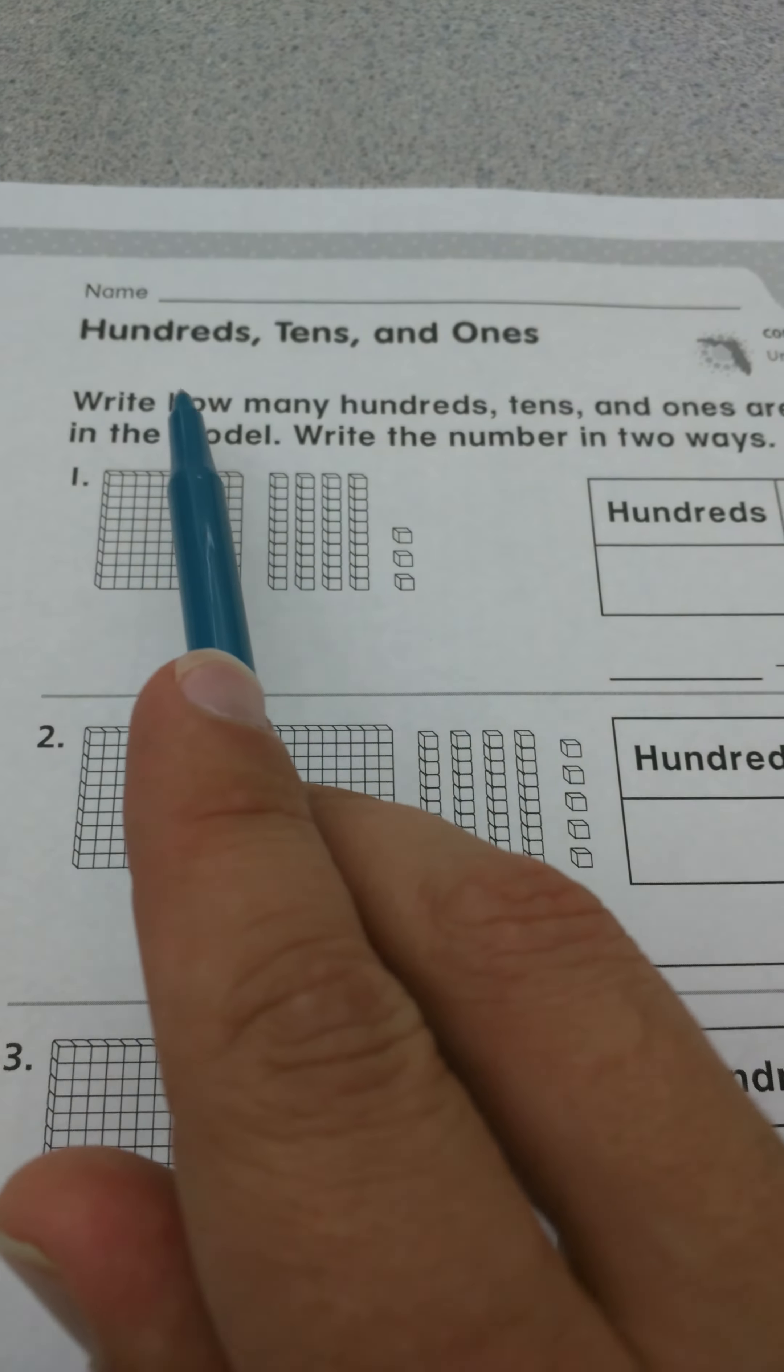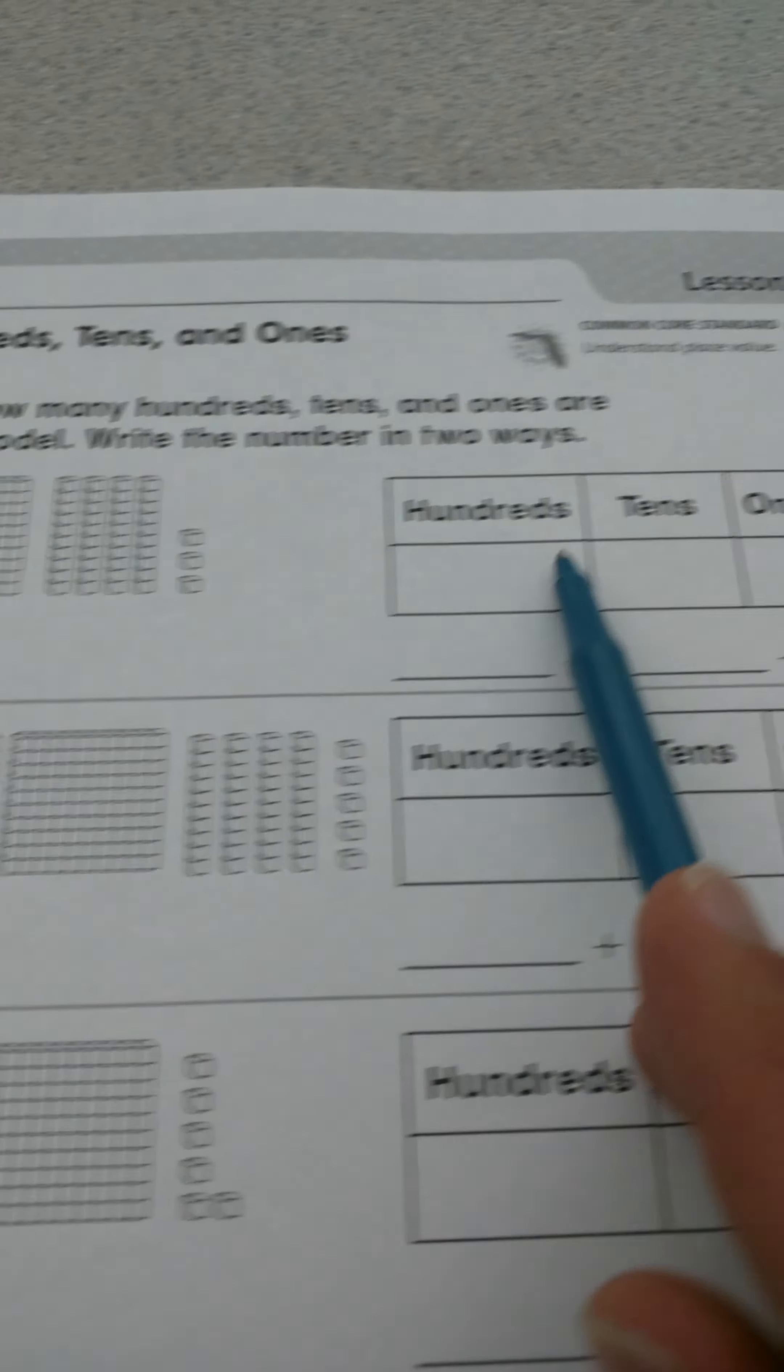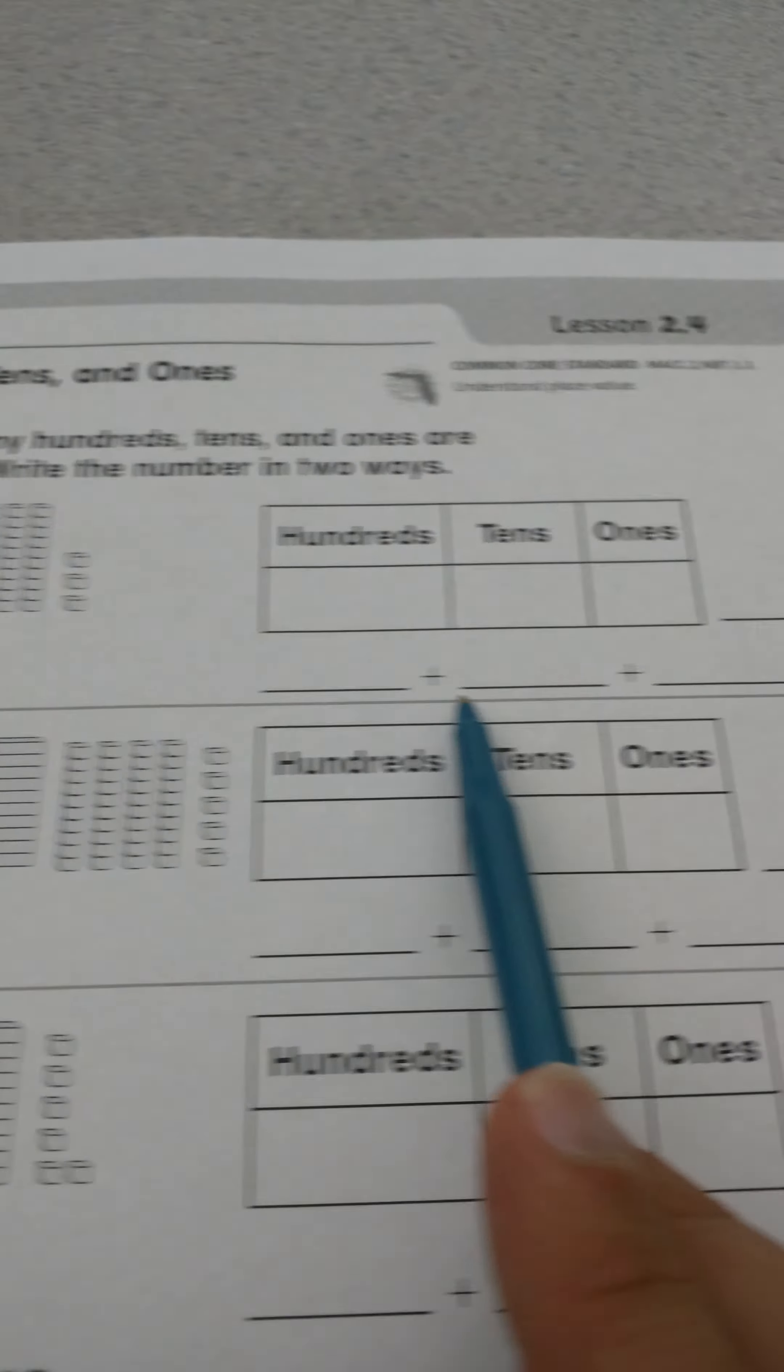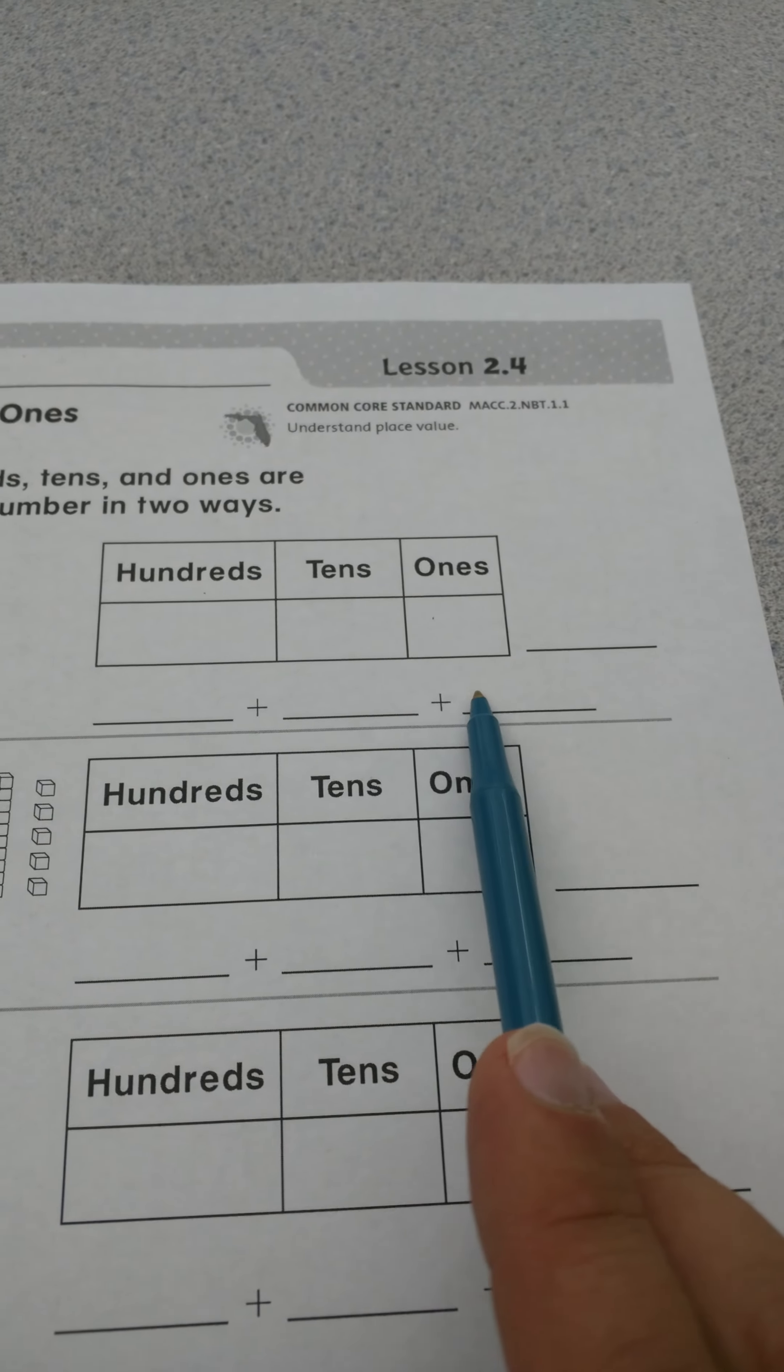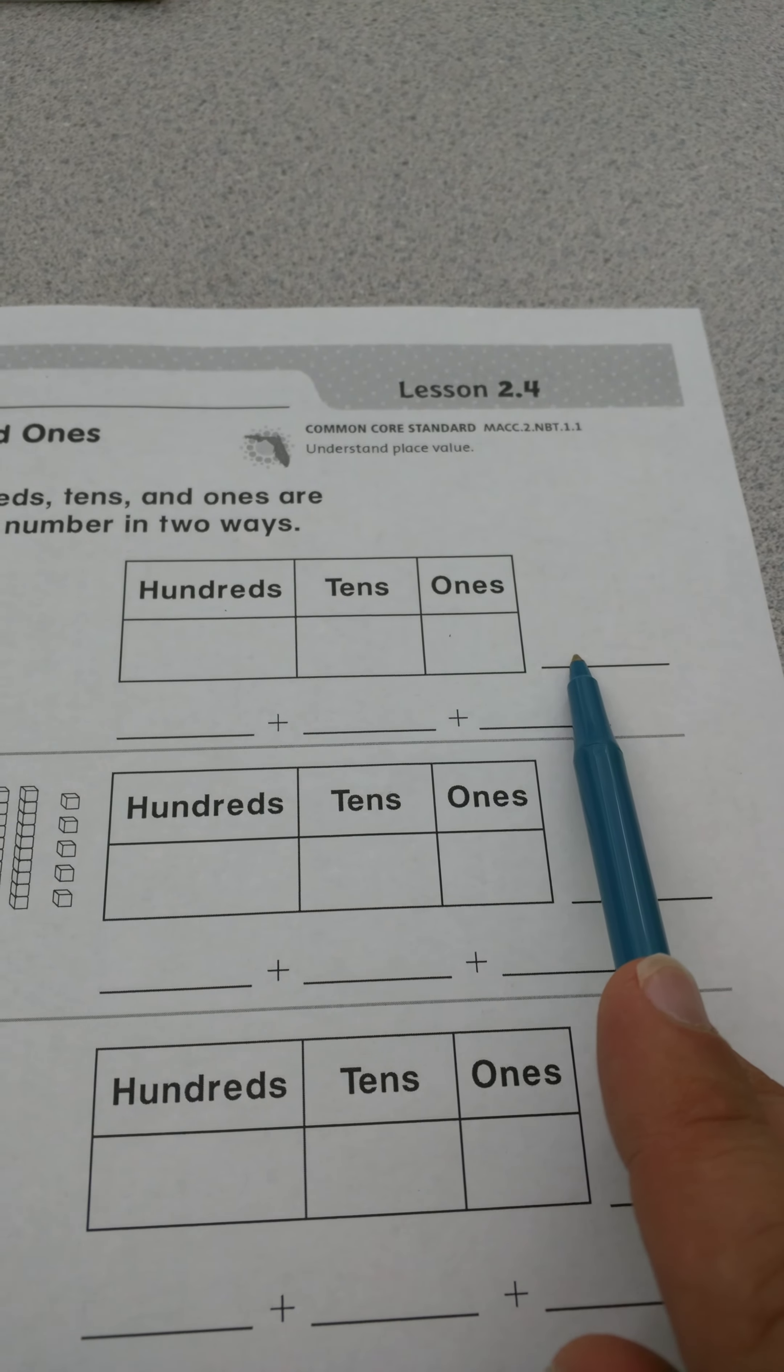Let's read the directions first. It says, write how many hundreds, tens, and ones are in the model. So we did this yesterday where we broke it into place value. Write the number in two ways. So we have the famous expanded form, and we're going to write the number out right on this line here.